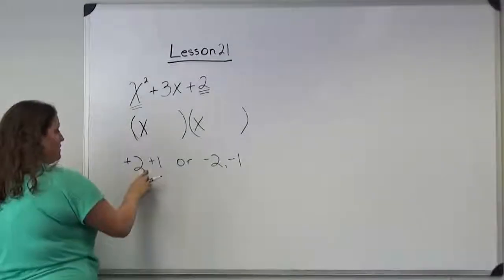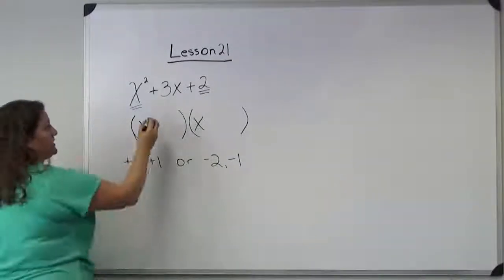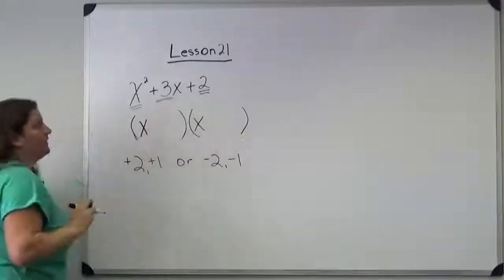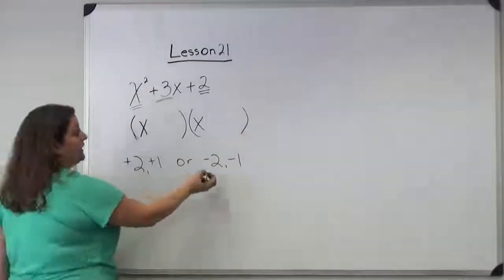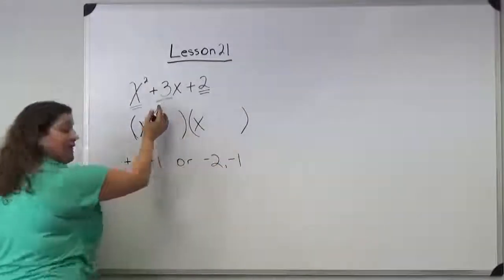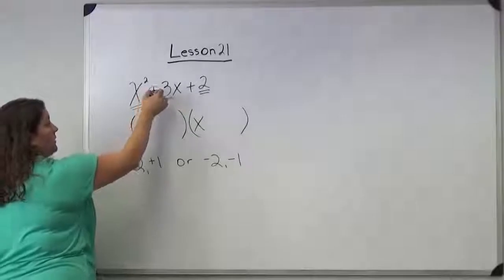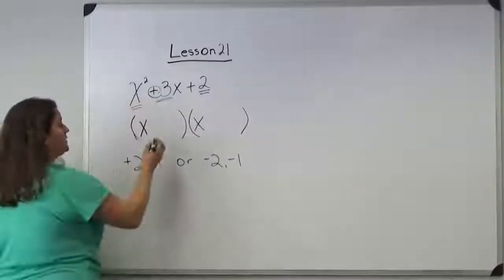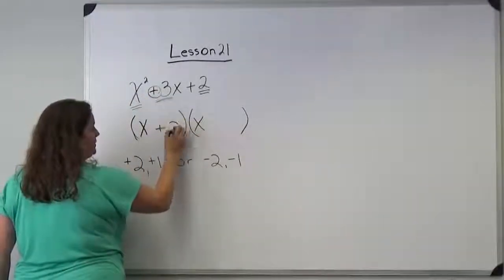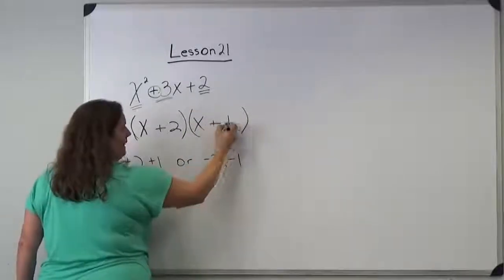You determine which of these two factors you're going to use based on this middle number. If we used negative 2 and negative 1, we would get a negative 3 here in the middle, but we want a positive 3. So we're going to choose positive 2 and positive 1.